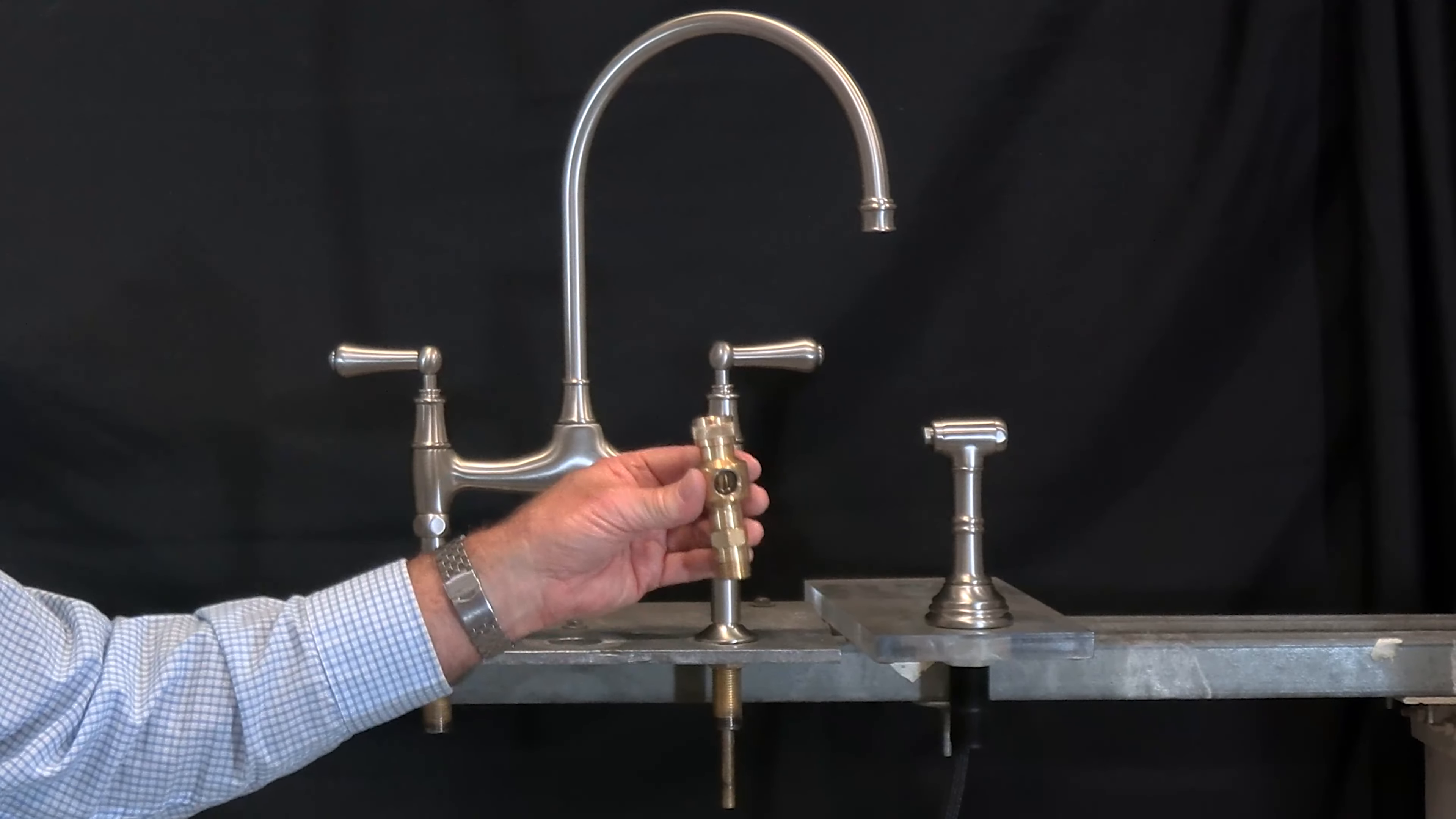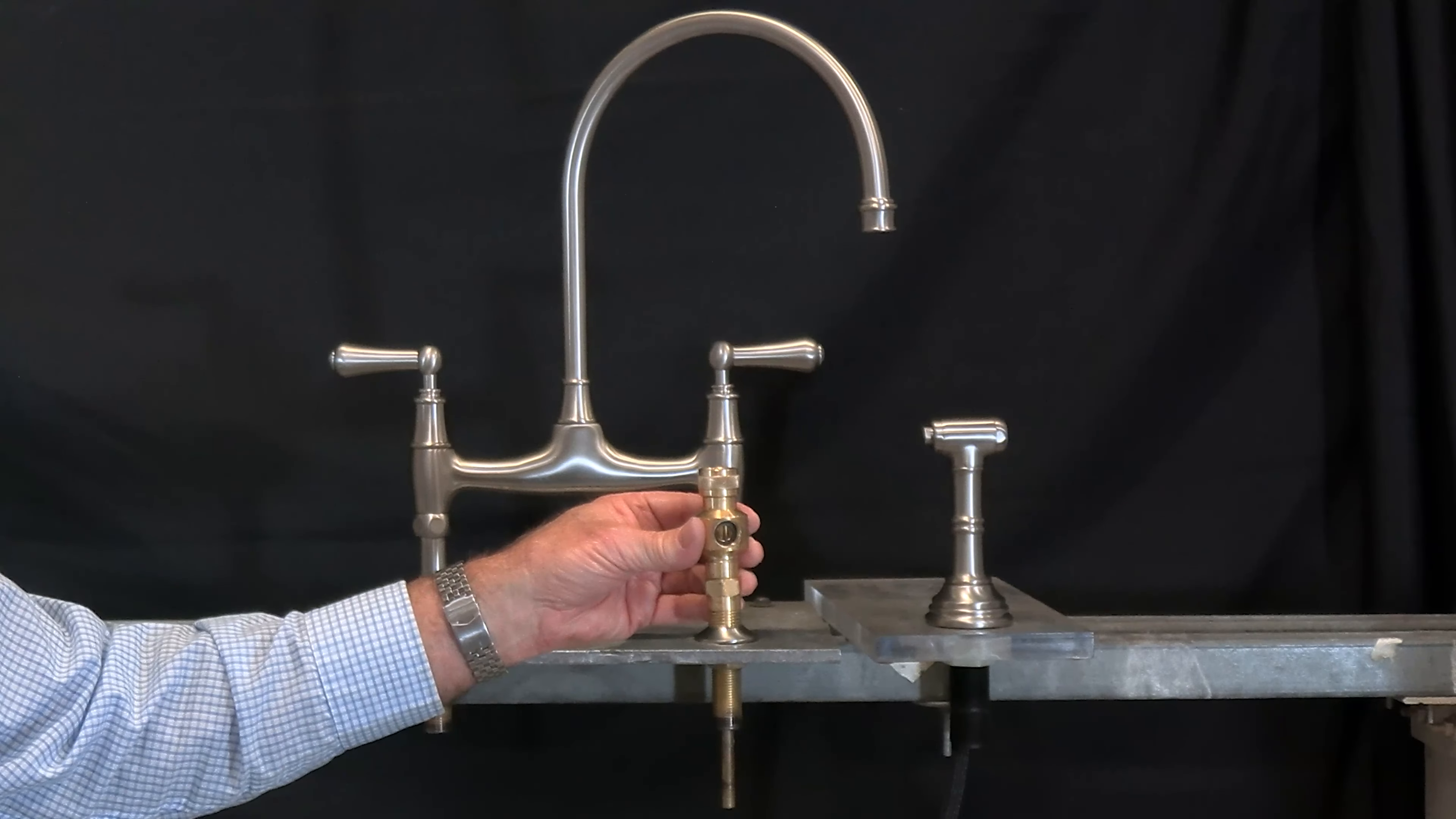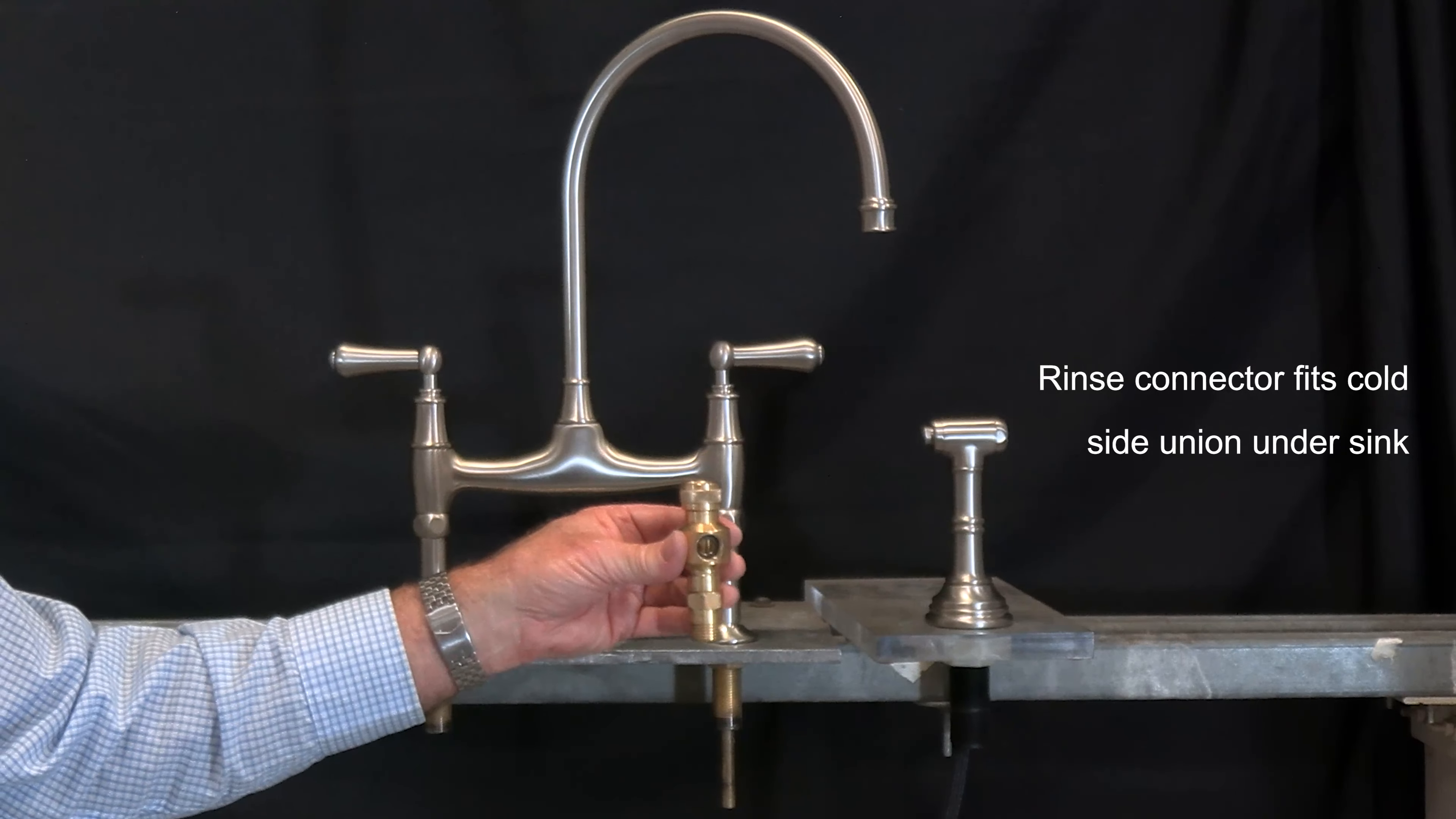This is the rinse connector. This is the heart of the whole system. This rinse connector allows the water to flow through the faucet out the cold side union and to the side spray.